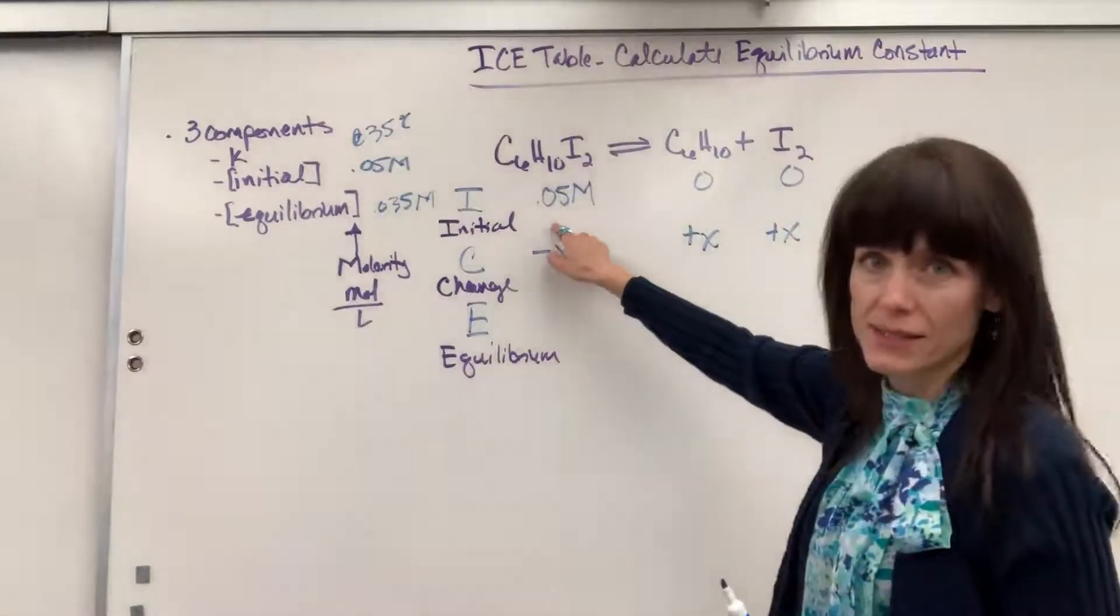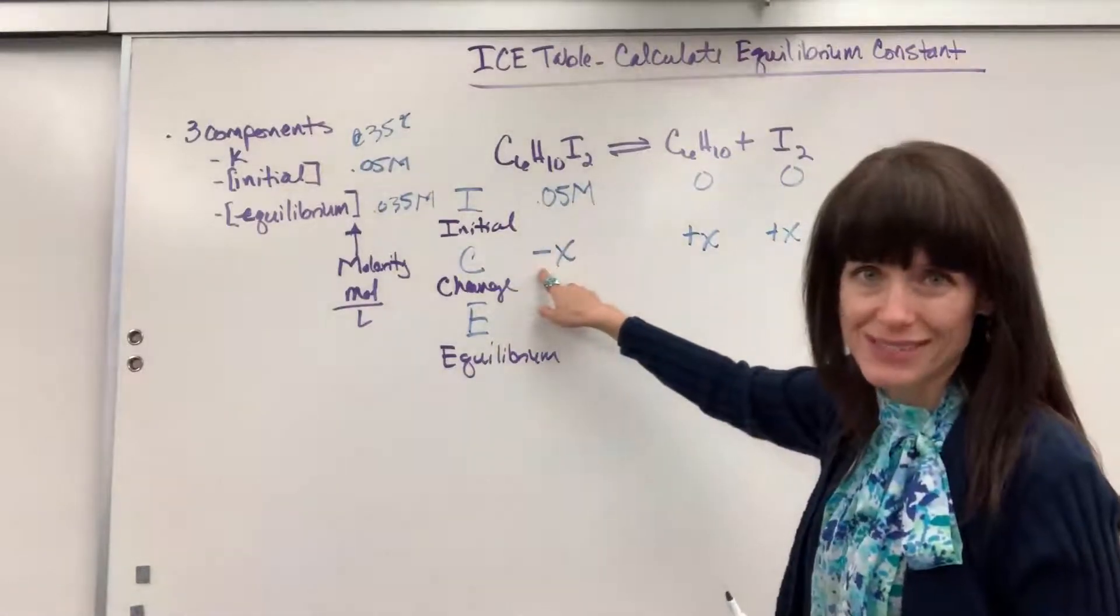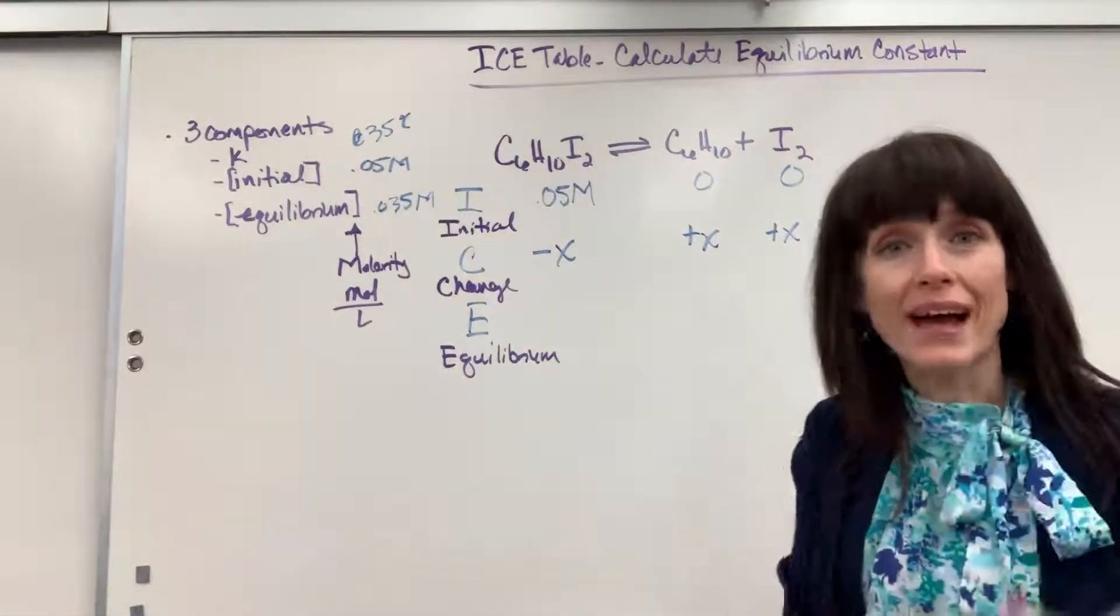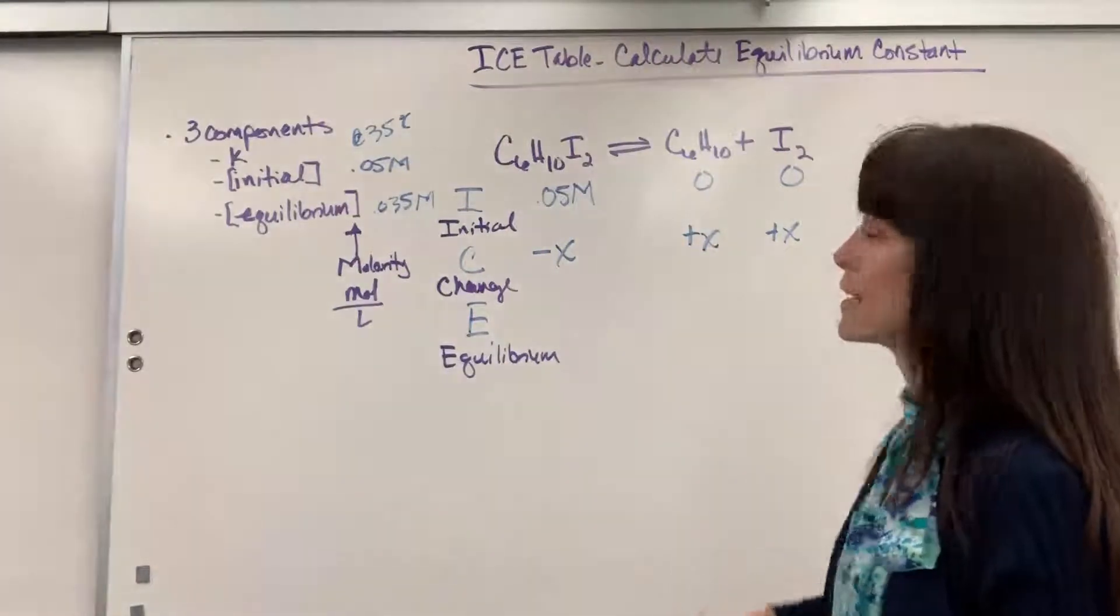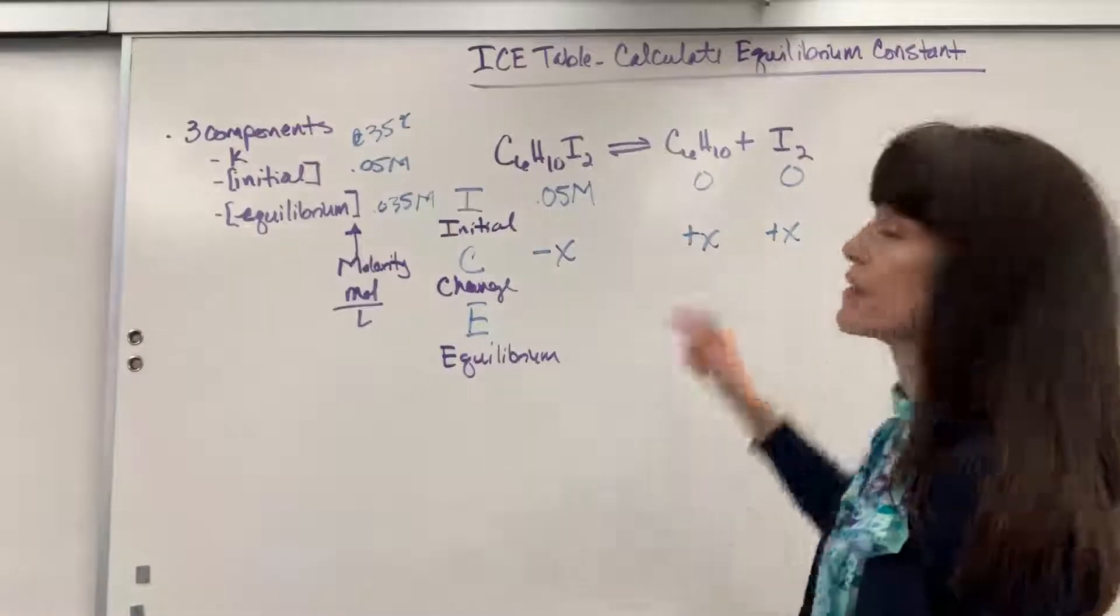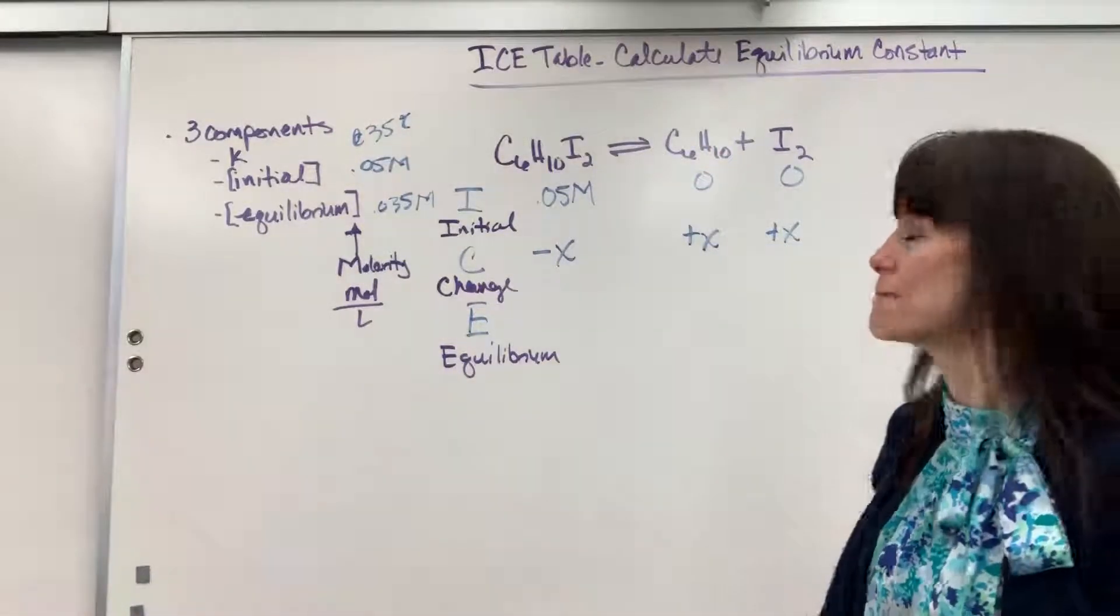So here's your big takeaway on writing the change. When you only have reactants here at the beginning, you're going to do subtraction because we've got to lose that reactant. The products will all be addition. Use X as your symbol because we don't know how much is lost, how much is gained, and just look at the coefficient. Put that in front. If this had been a 2, I would have done a 2X right there.